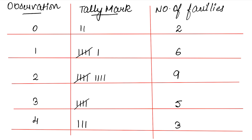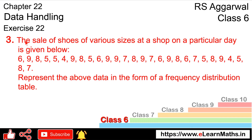Since the total frequency equals 25, our data is absolutely correct. We have successfully made the frequency distribution table, and we can now easily see how many families have 0 children, how many have 1, and so on.